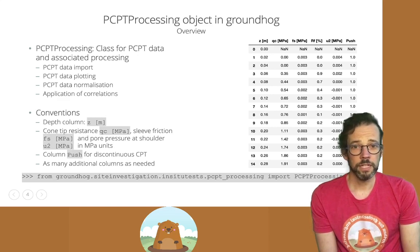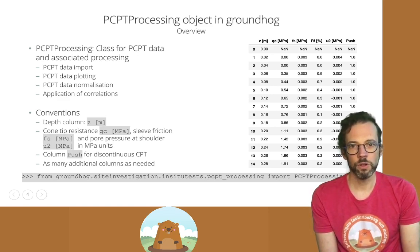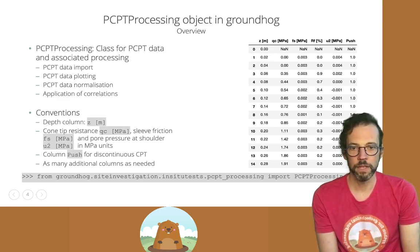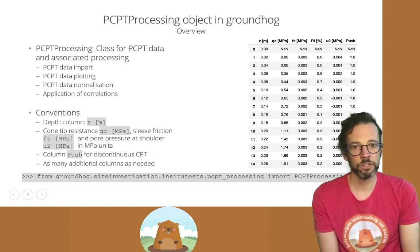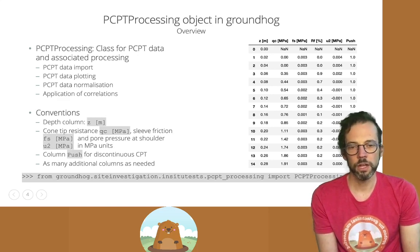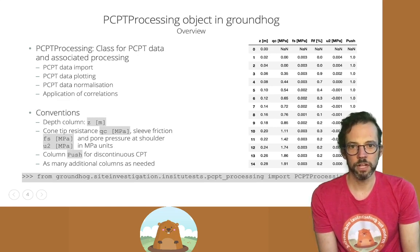On top of the standardized data we can add as many additional columns with other data such as pore pressure ratio, friction ratio, etc. as we like. In the example shown on the right you can see that friction ratio is also imported alongside the other columns. Importing the PCPT processing object in the Jupyter notebook happens with the line of code shown at the bottom of the slide.